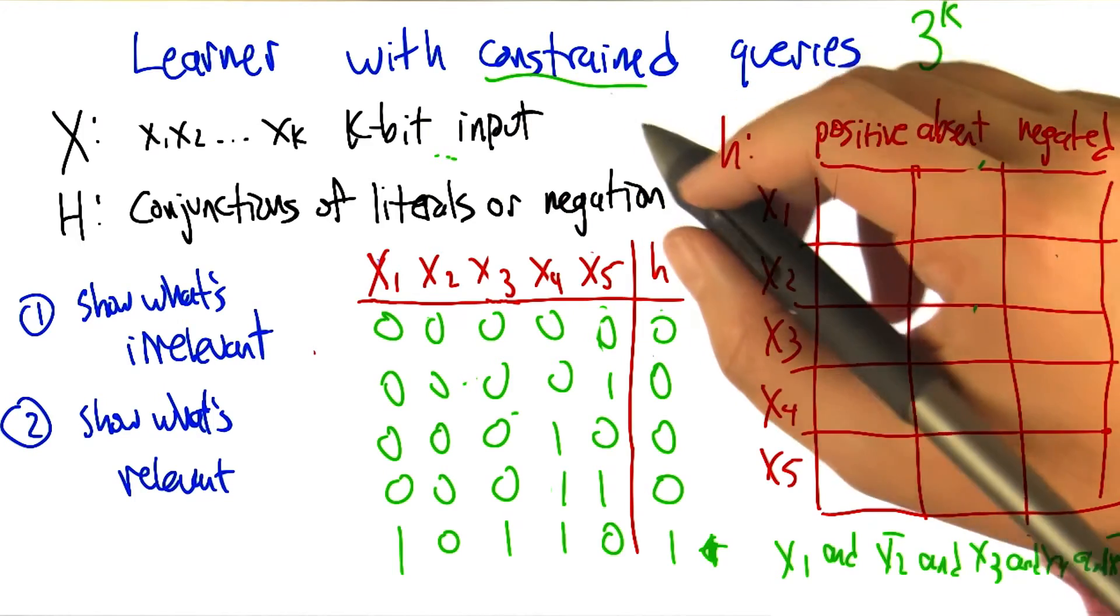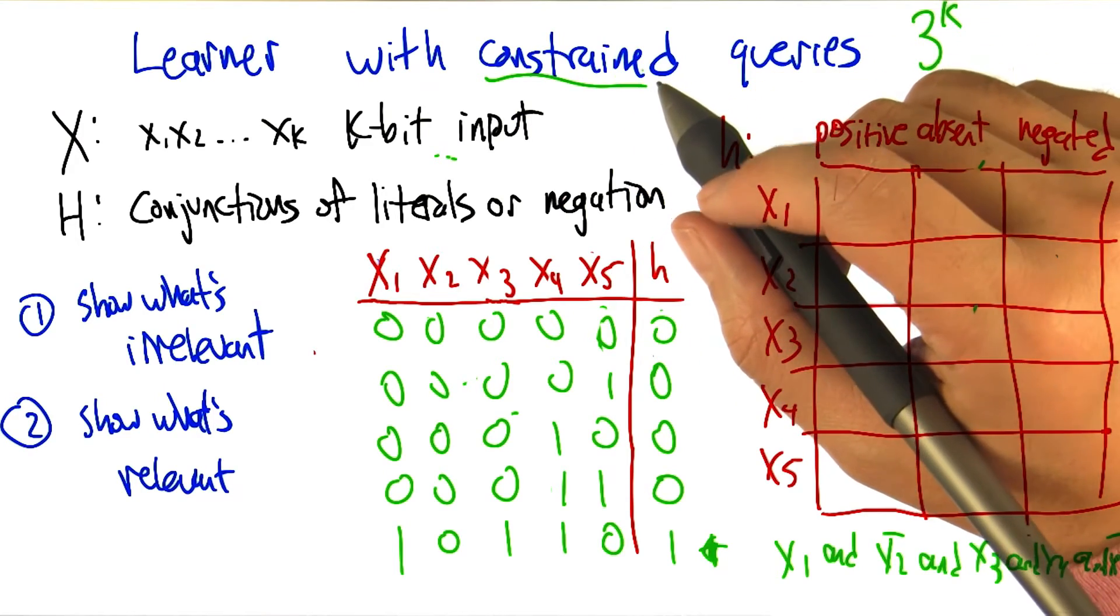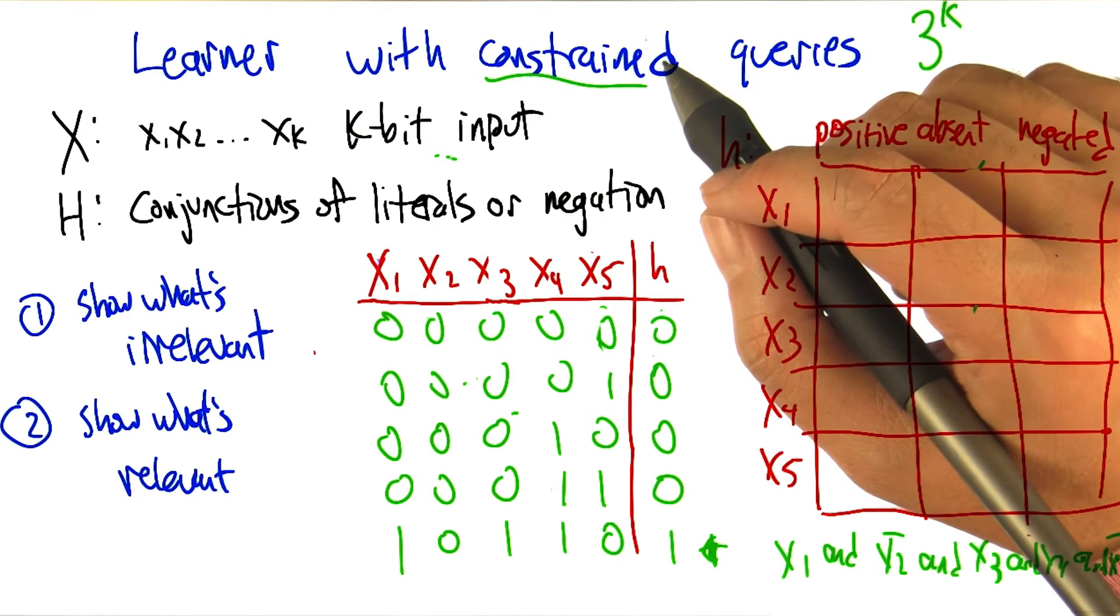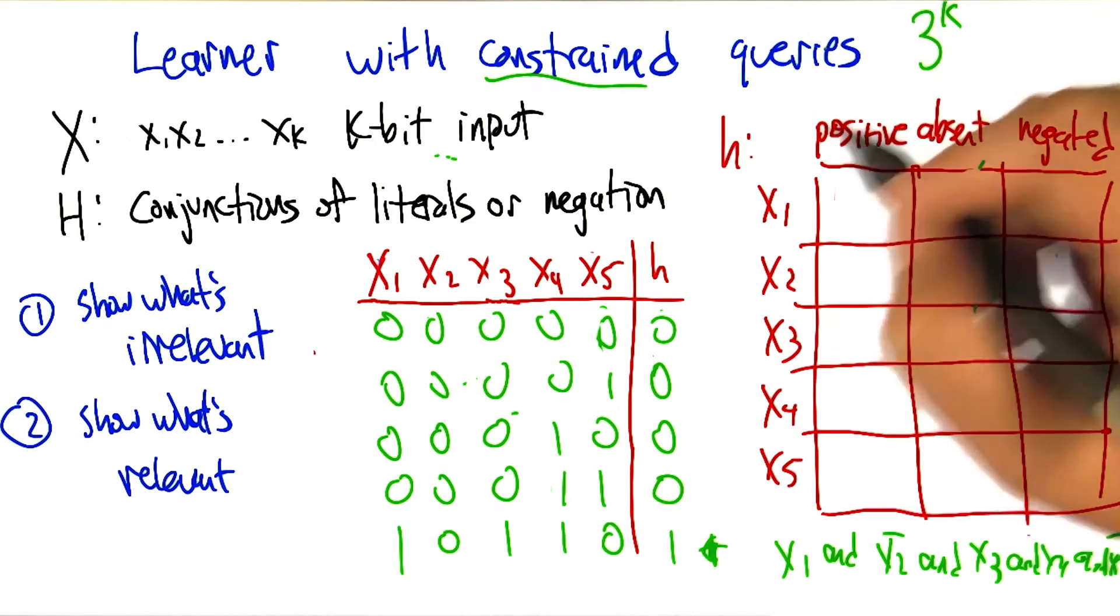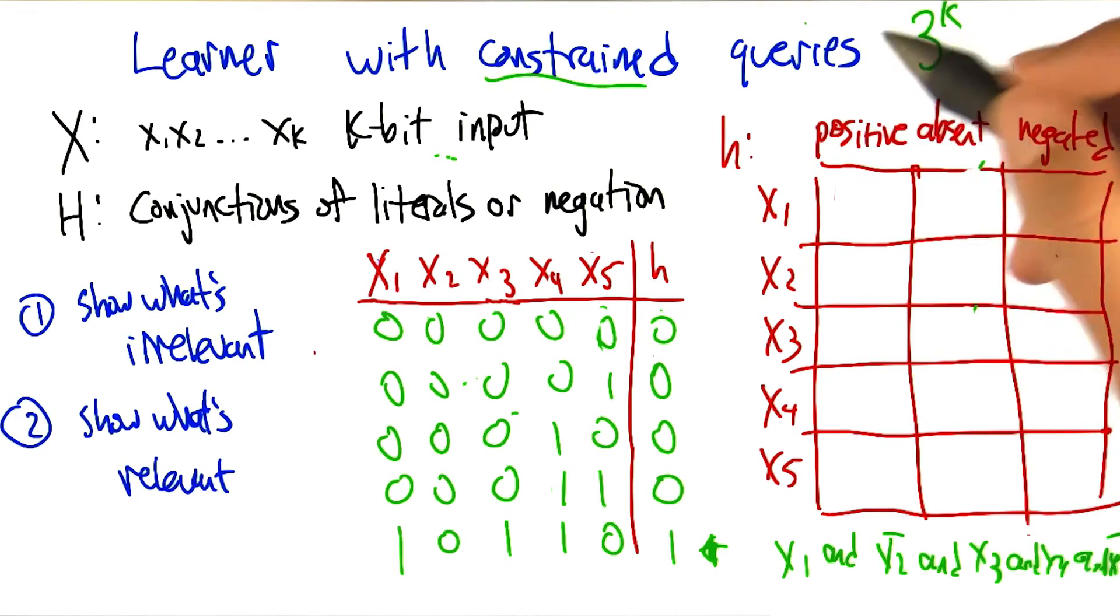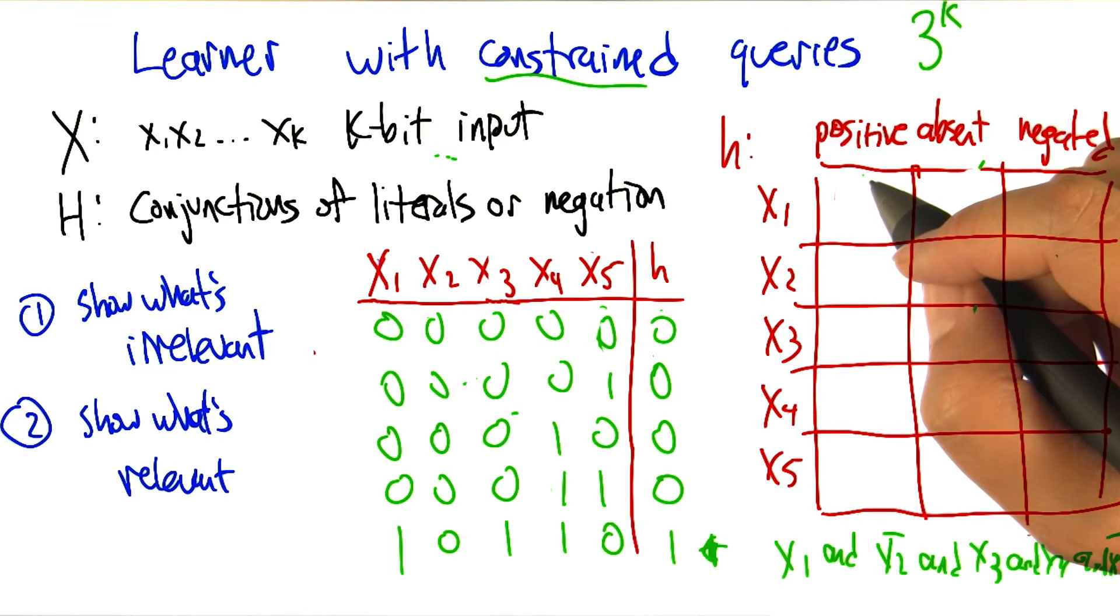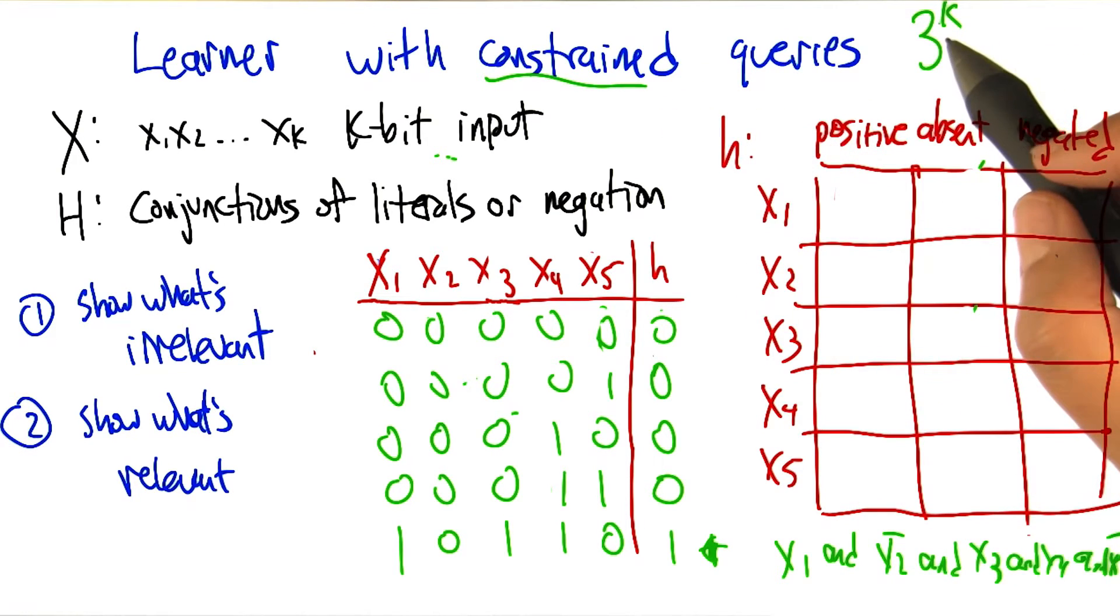So this constrainedness is really, it's very frustrating, right? Because the question that you really want to be able to ask, you can't really ask, right? You want to be able to ask a question that takes the hypothesis class and split it in half. And, well, maybe you can. I mean, maybe you can nearly do that, but it's still going to be, oh no, sorry, that would make it linear.